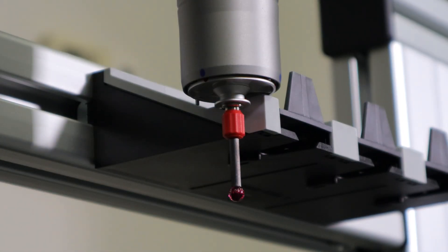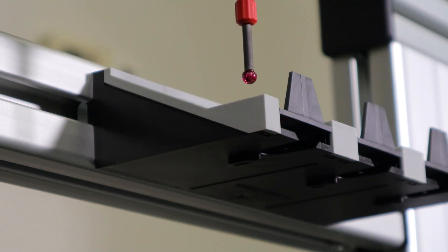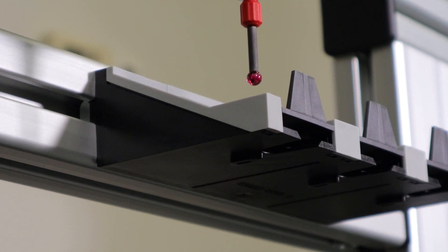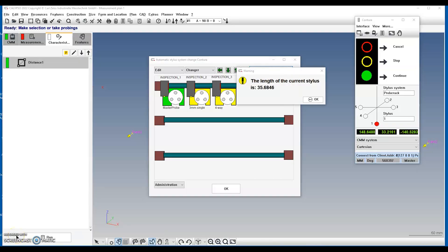Once you've probed it using the adapter plate, raise the stylus and take a point in the same location with the ruby. This process determines the length of your stylus. The length should be between 35 and 36 millimeters.